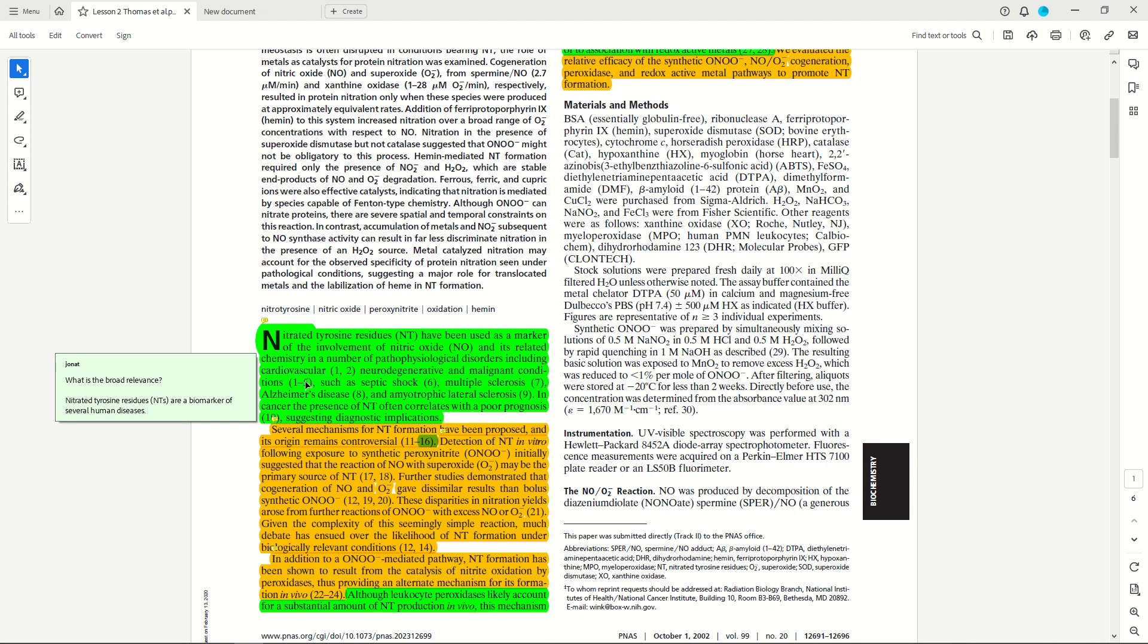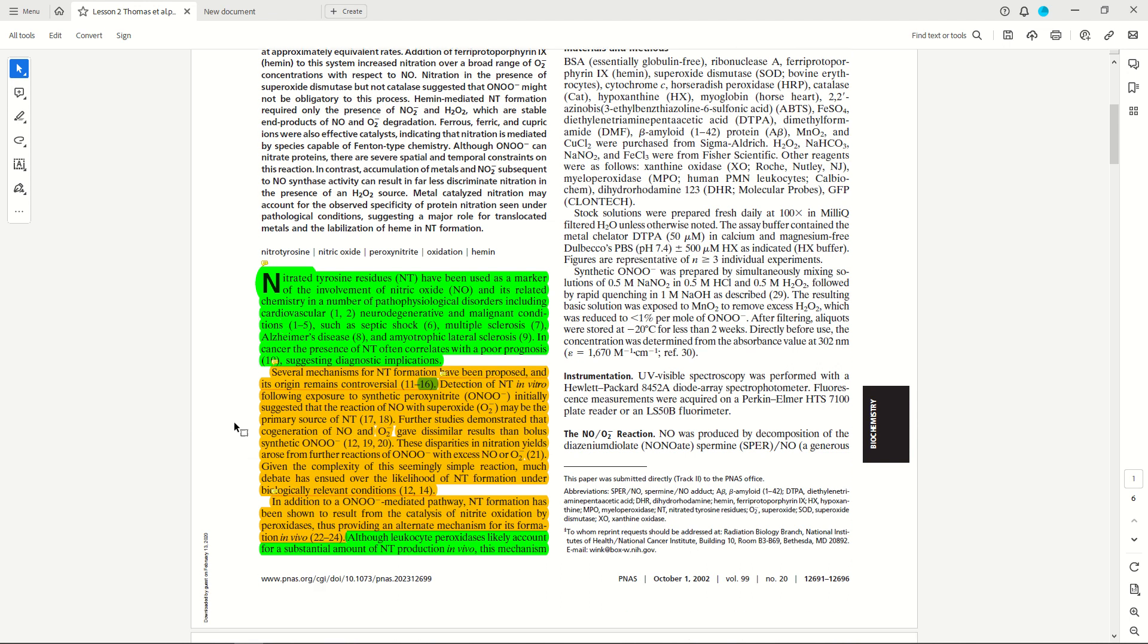And so the broad relevance is related to human health and more specifically, understanding nitrated tyrosine residues—they tell us something as being a biomarker of human diseases. Then we continue to go from this broad relevance to start understanding what is known about nitrated tyrosine residues, which authors have elected to abbreviate as NT.